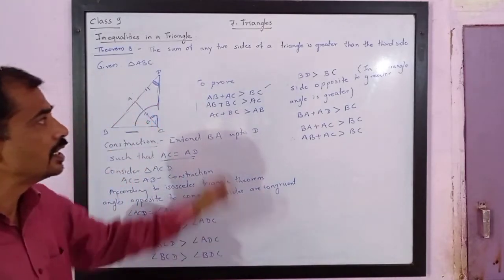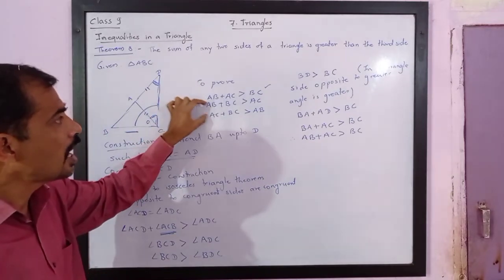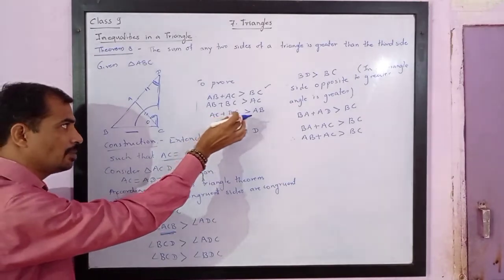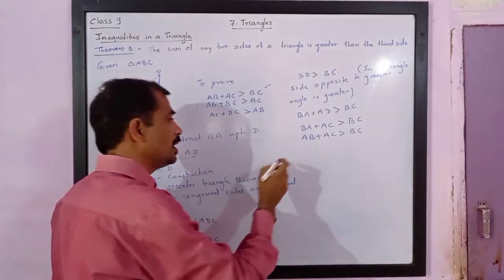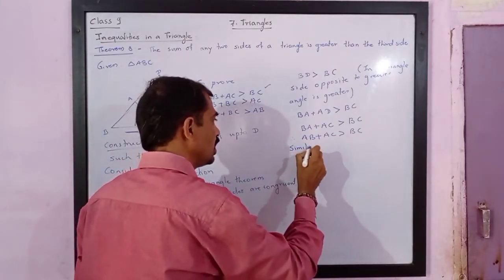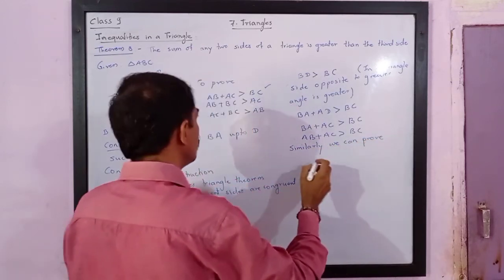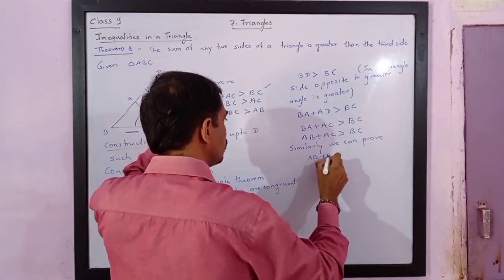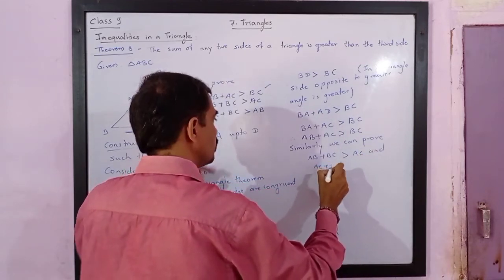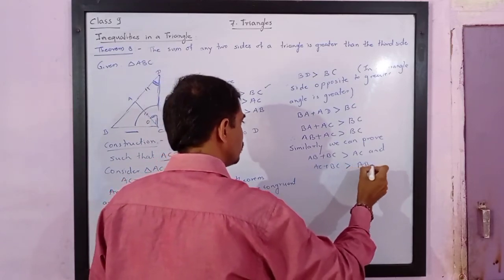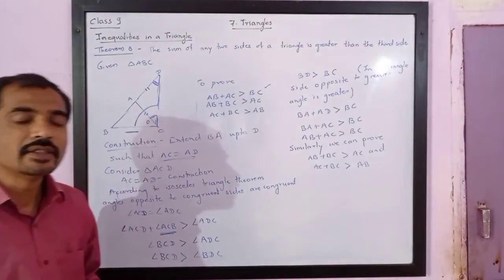Similarly, we can prove AB plus BC is greater than AC, and AC plus BC is greater than AB, by doing the construction in a different way for each. Thus, we can say that the sum of any two sides of a triangle is greater than the third side.